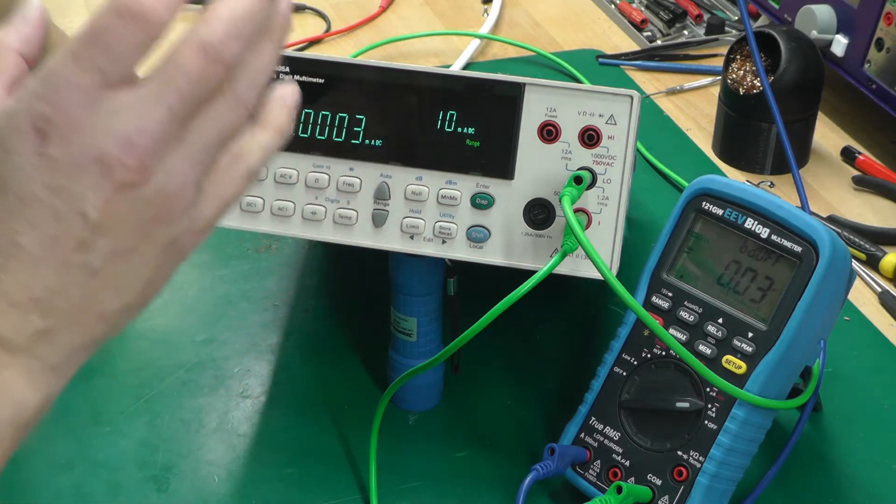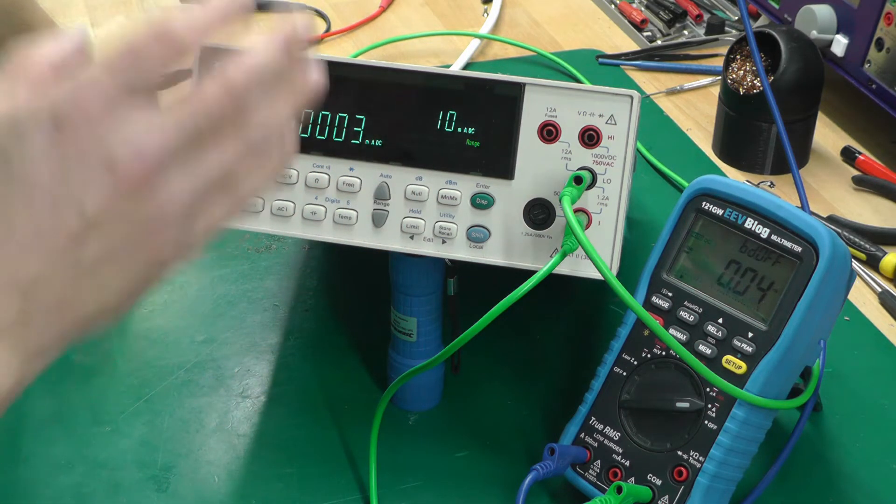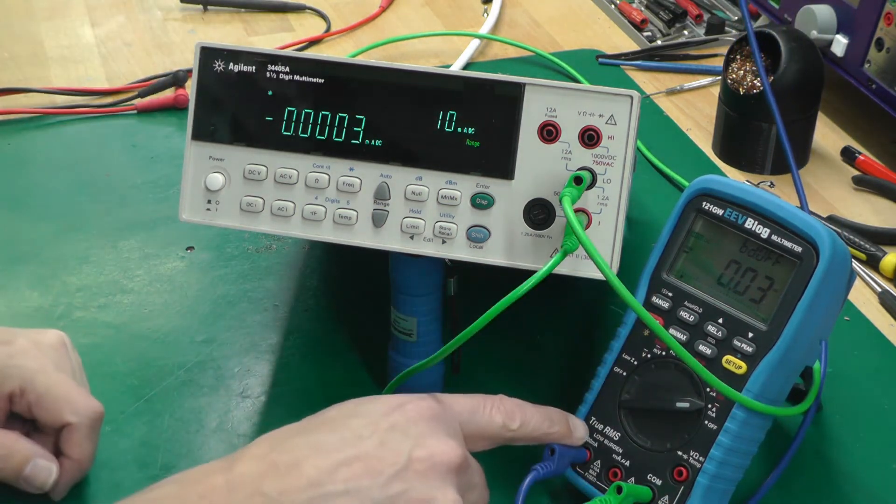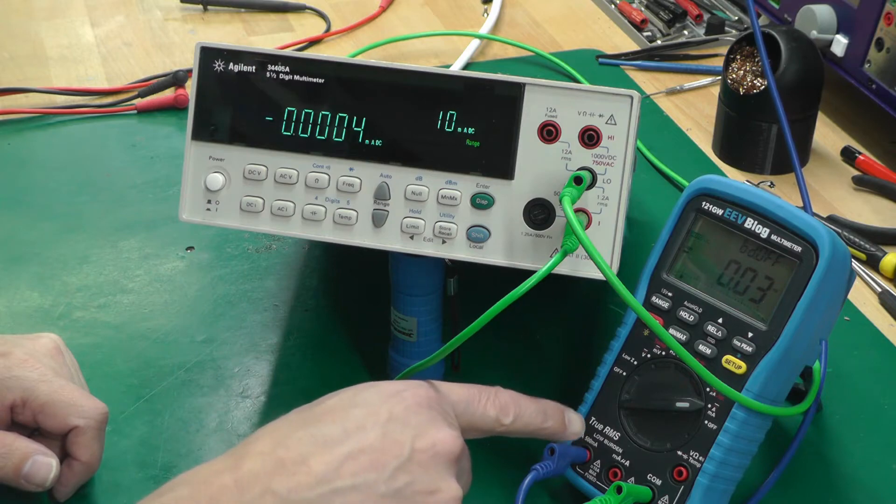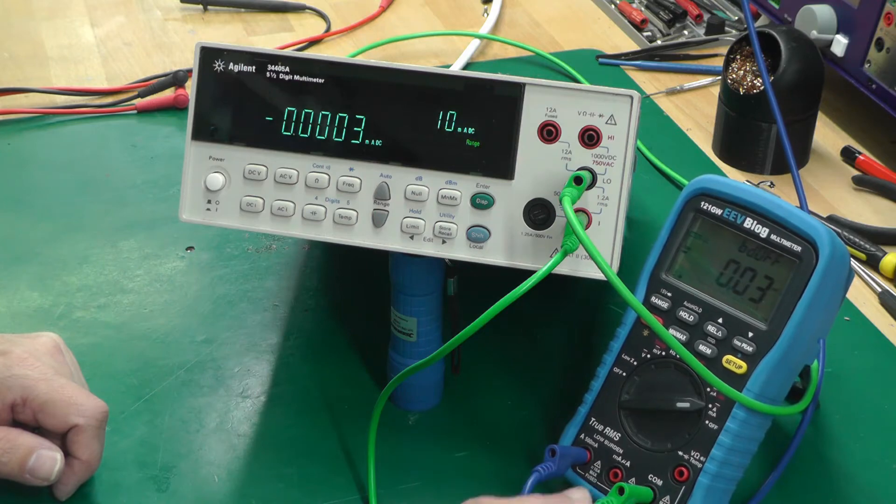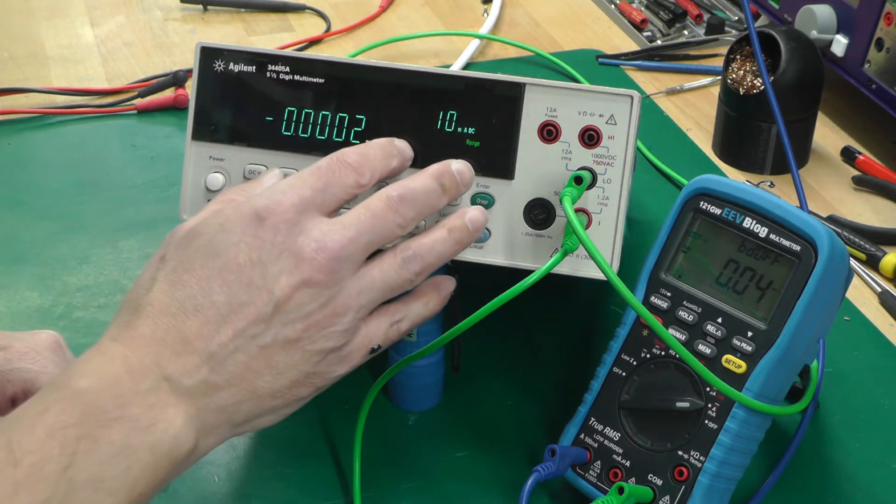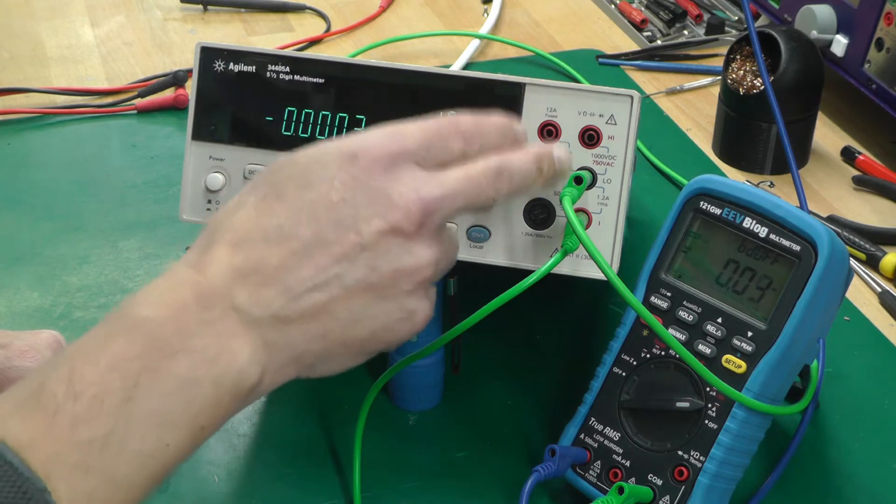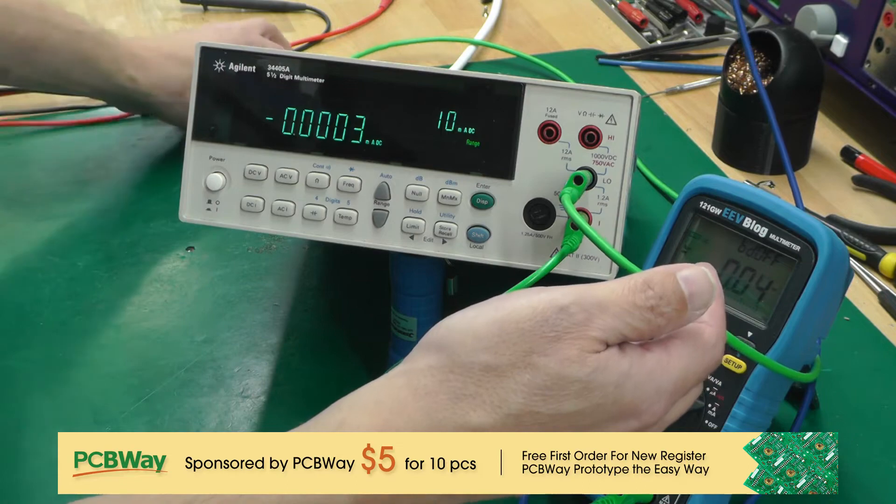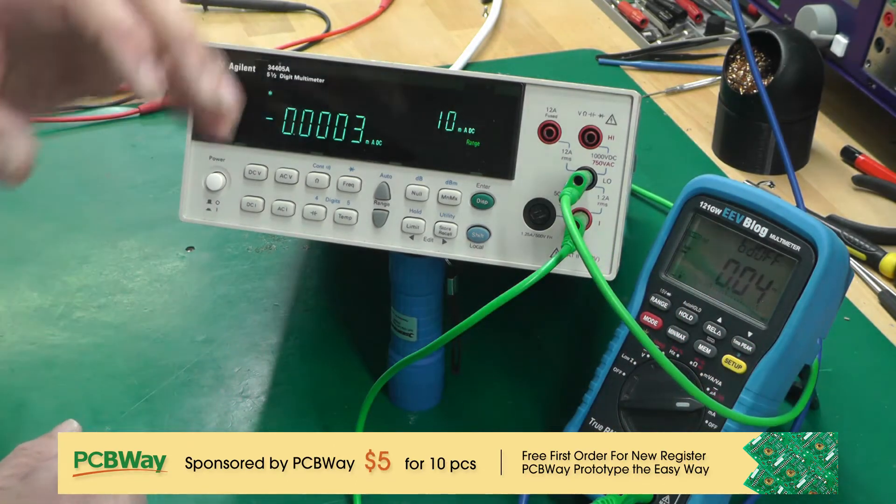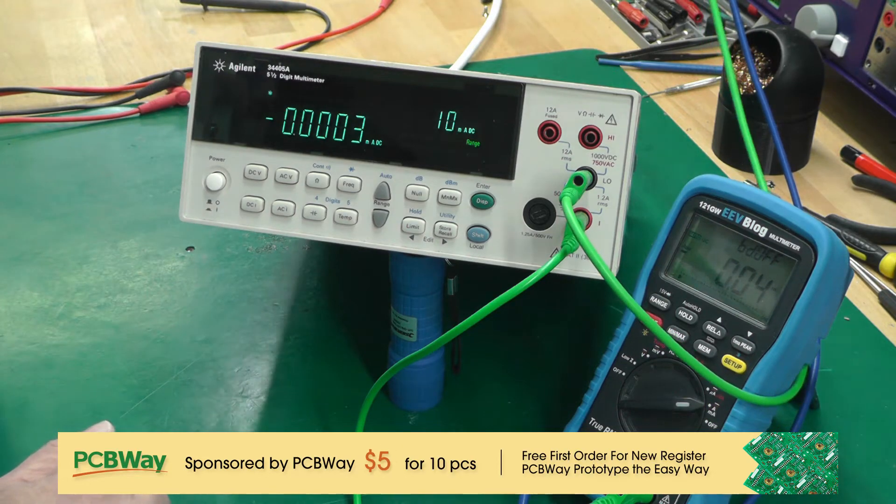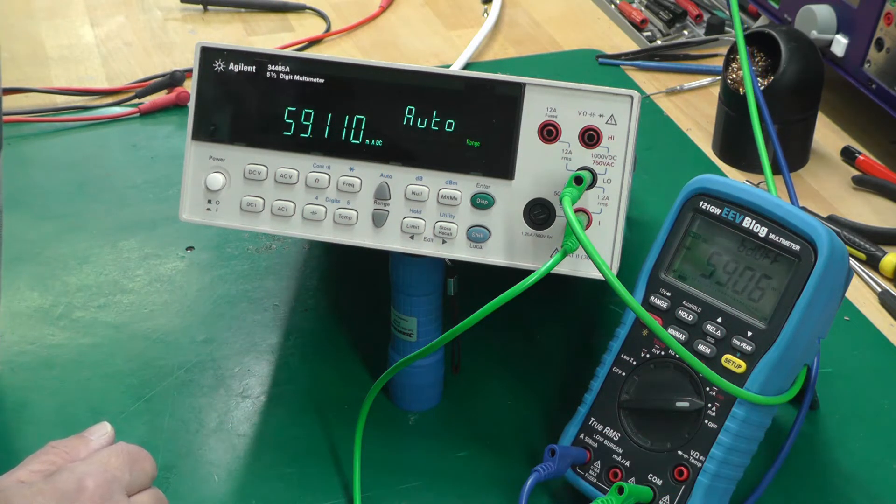Okay, so what I've got - I've got a bench power supply off camera at the moment, and the positive output of that's coming down into my 121GW, also set to current mode. Then the output of that is going into the input of the 34405A, and then the negative side, the low side of this multimeter, then goes back to the power supply. I've got the power supply set to constant current mode, so I can dial up any current reading that I want. So let me just plug that in. I've got it set real low at the moment.